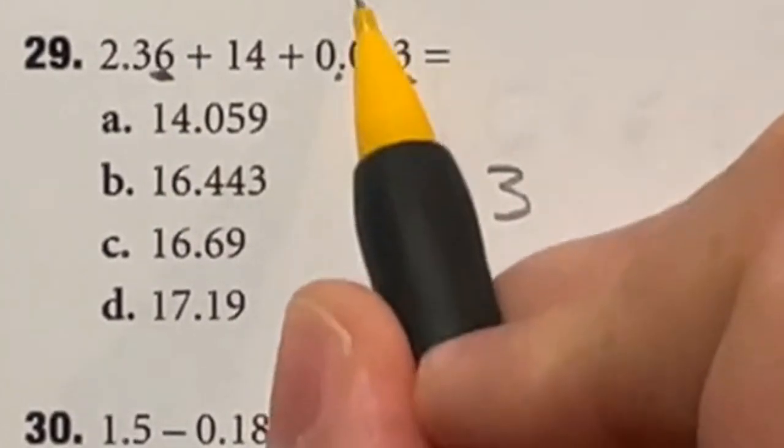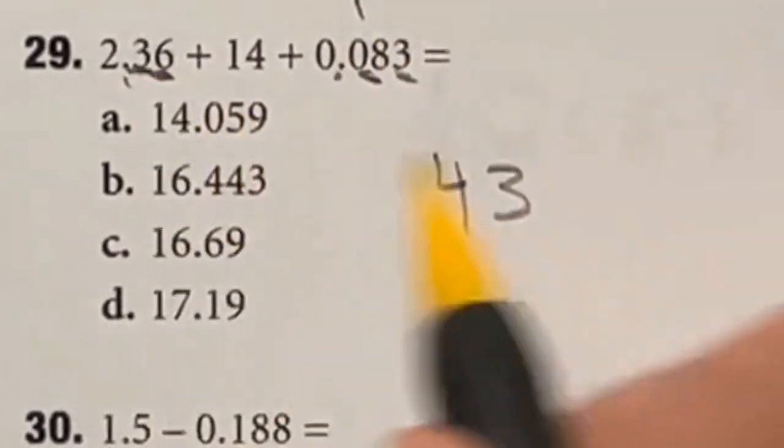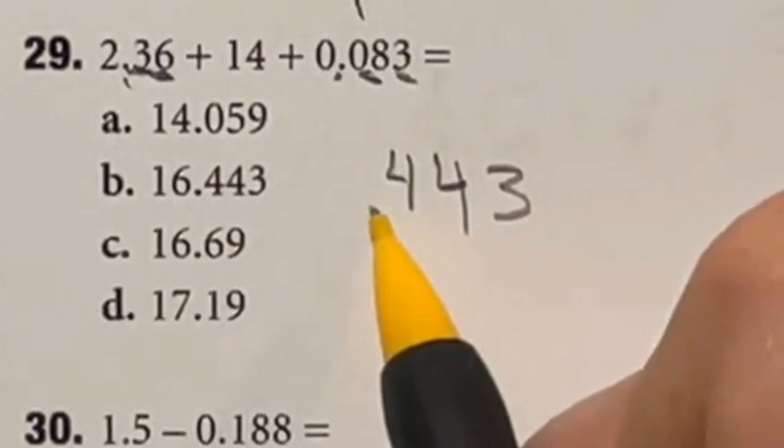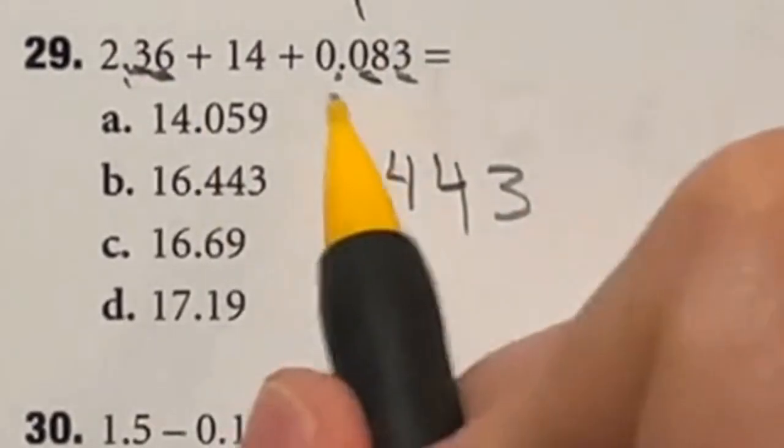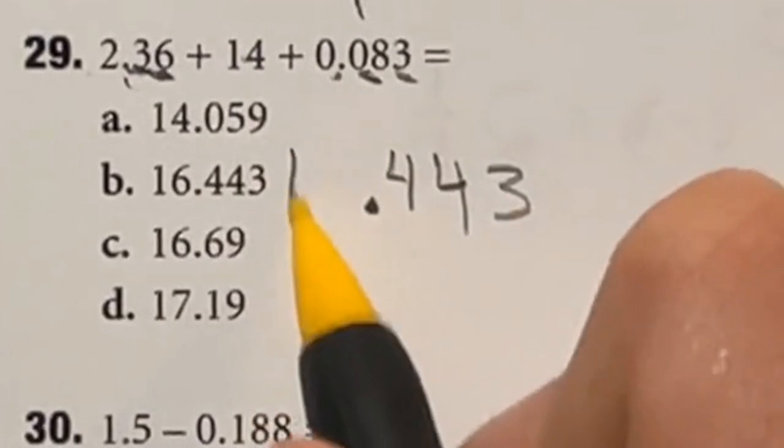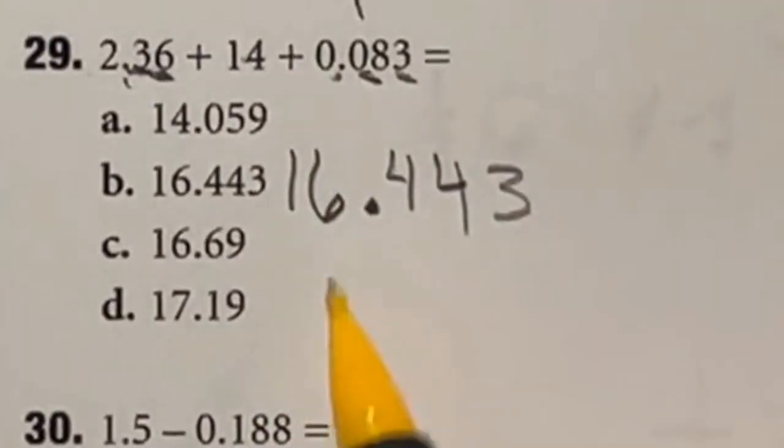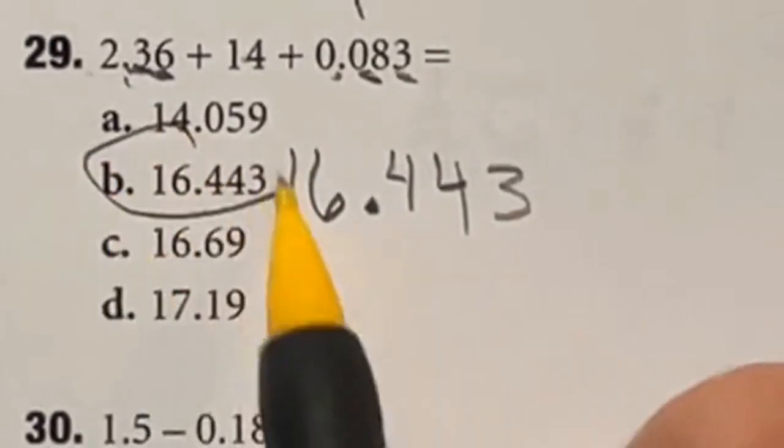This zero is not going to add anything, so that one plus the three right here is going to give me a total of four. We now have our decimal place. And the only numbers we have in front of the decimals is the 14 and the two. If I add those together, it gives me 16. So our final answer should be 16.443, which is B.